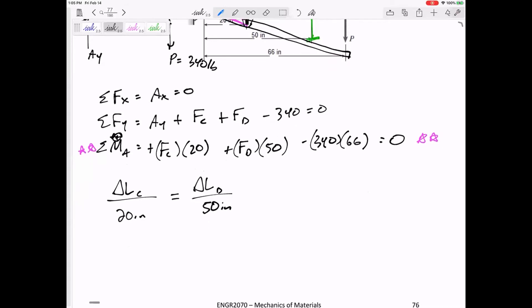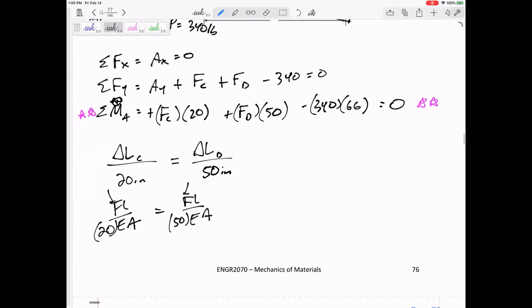The FL over EA over 20 is equal to the FL over EA of 50. But let me be careful because those aren't the same Fs. This is the force inside C, this is the force inside D. I drew them in tension. This is the length of D, this is the length of C, the E of D, the E of C. So make sure the F, the L, the E, the A is for wire C and wire D.